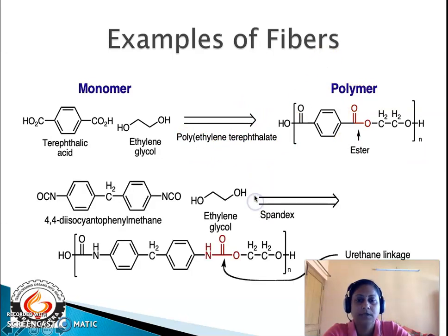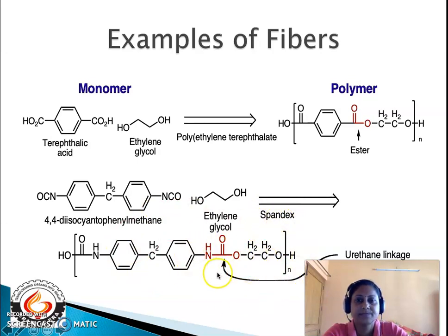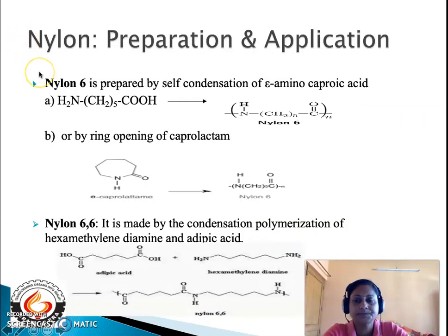The next example is a urethane linkage, forming a polyurethane. It is formed from two monomers: 4,4'-diisocyanatodiphenylmethane, which has isocyanate functional groups at the terminal carbon atoms, and ethylene glycol with two OH groups. The isocyanate and OH groups condense with loss of a water molecule to give a urethane linkage (highlighted in red). This unit repeats n times to give polyurethane — which is spandex, a fiber.